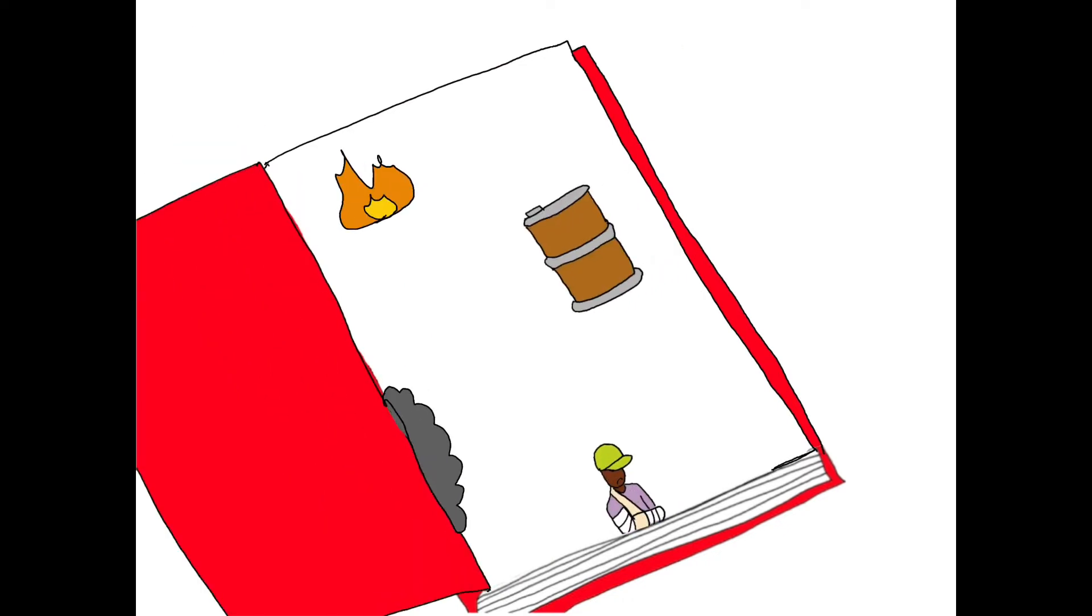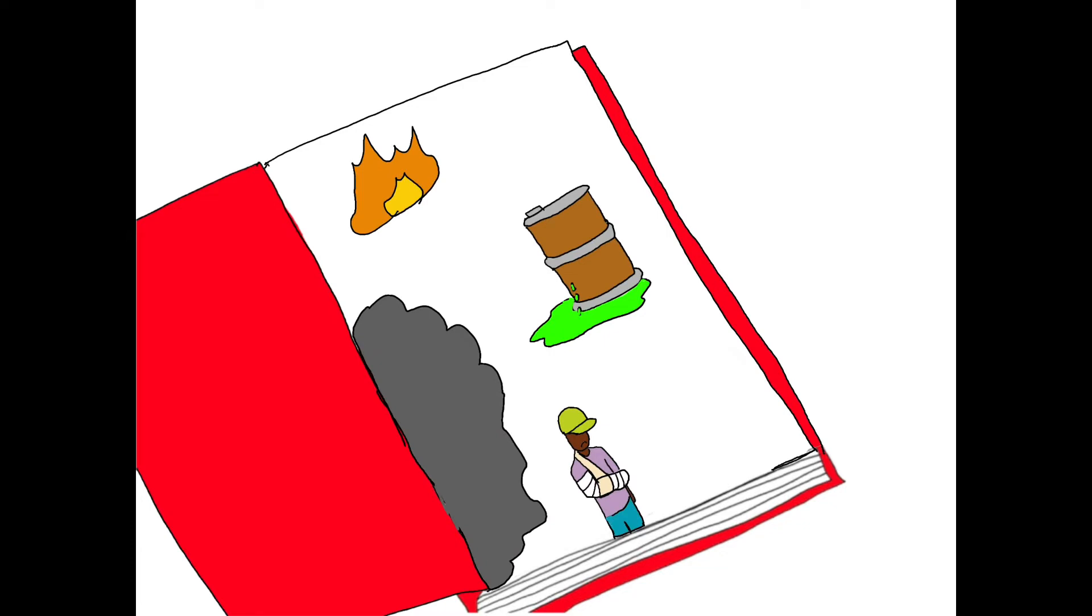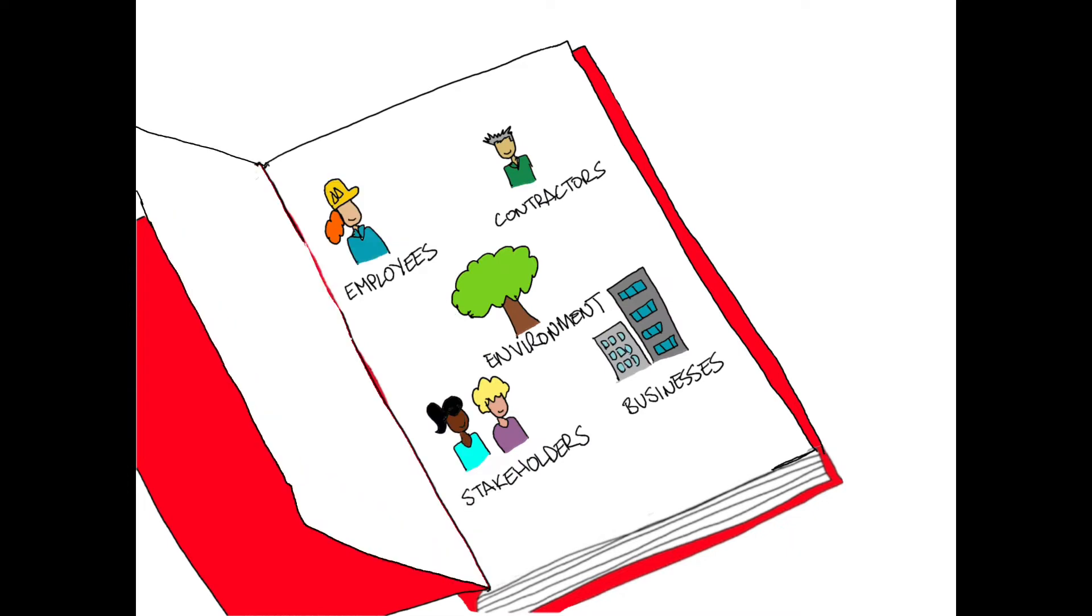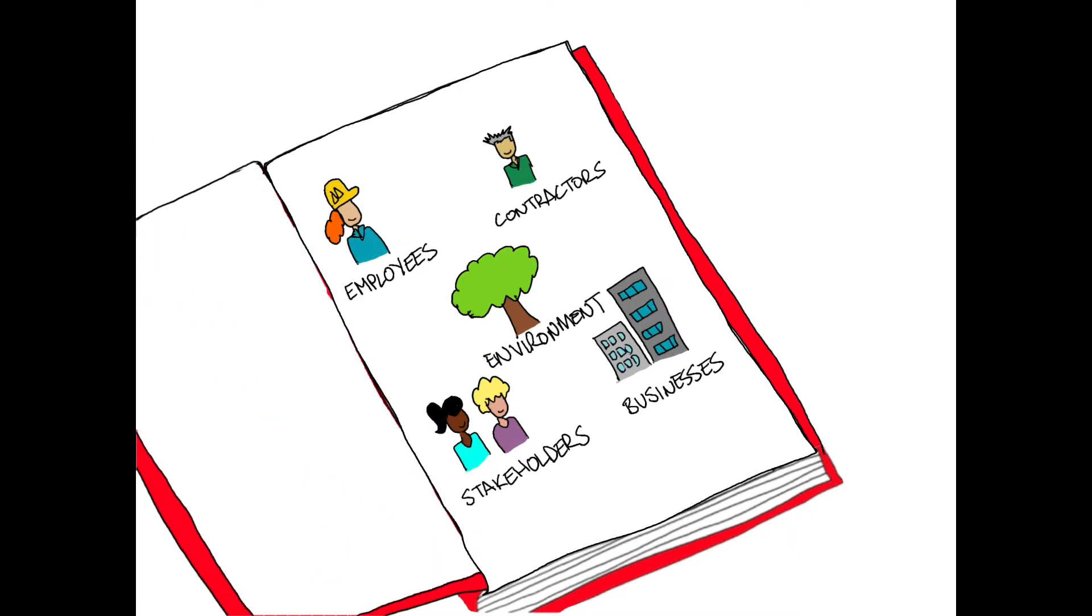For a management system to work, we need to know what we're managing. This means identifying the key risks from our operations to the different groups that could be impacted: our business itself, employees, contractors, stakeholders, and the environment.